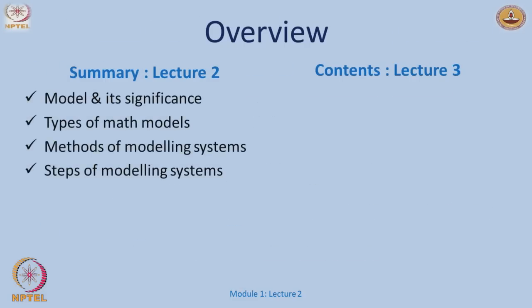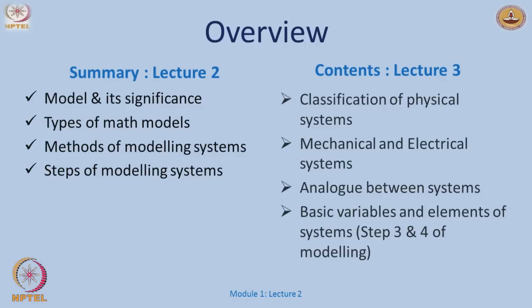In this lecture, we have looked at why we need a model, how to obtain one, what the types of mathematical models are, and the various steps involved in modeling systems. In the next lecture, we will classify our modeling process into physical systems — specifically mechanical and electrical systems. We will explore analogies between mechanical and electrical models, identify the basic elements in each domain, and understand how to arrive at and analyze those models.